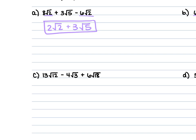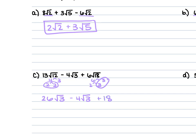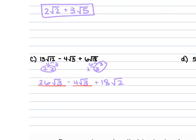For part C, we have 13 square root of 12 minus 4 square root of 3 plus 6 square root of 18. The 12 breaks down to 4 times 3, and 4 is 2 times 2, so 2 times 13 is 26 square root of 3. The 18 is 6 times 3; the 6 is 2 times 3, so we have a pair of 3's — giving 3 times 6 is 18 square root of 2. Then 26 square root of 3 minus 4 square root of 3 gives 22 square root of 3 plus 18 square root of 2.